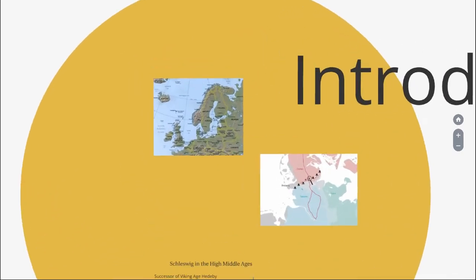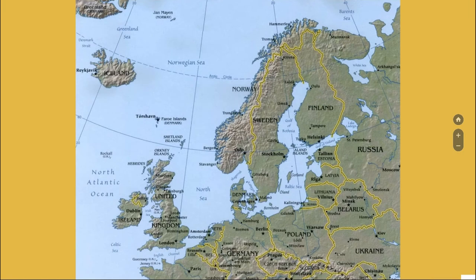The most important thing about Schleswig is its topographic location. Schleswig is located in the south of Denmark at the narrowest part of the so-called Jutland peninsula. This position in between several economic zones — the economic zone of the North Sea, the Baltic Sea, with the hinterlands — as well as connecting the continent of Scandinavia, is really important for medieval trade connections.